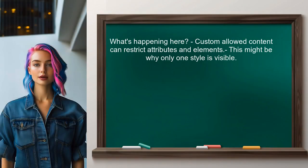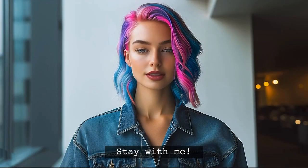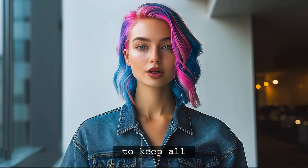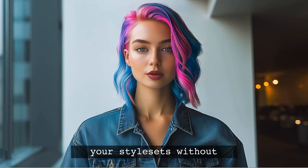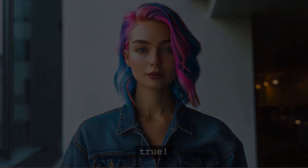So what's happening here? When you set a custom allowed content configuration, it can restrict certain attributes and elements, which might be why only one style is visible. Understanding this is key to finding a solution. By the end of this video, you'll know how to keep all your style sets without using the allowed content true setting.